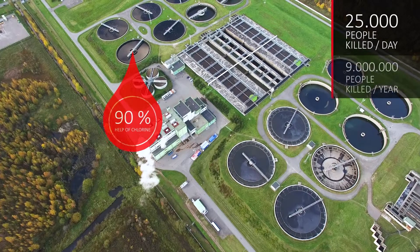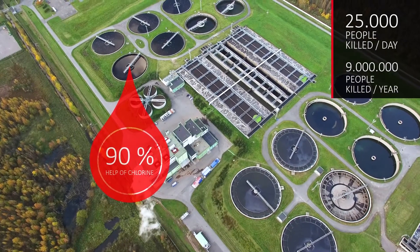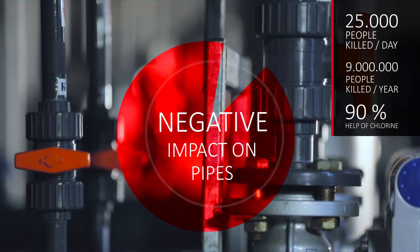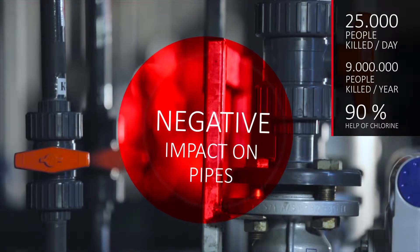More than 90% of European drinking water is made safe with the help of chlorine. Chlorine level has a significant negative impact on material performance in the piping system.